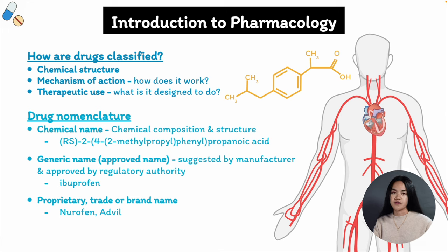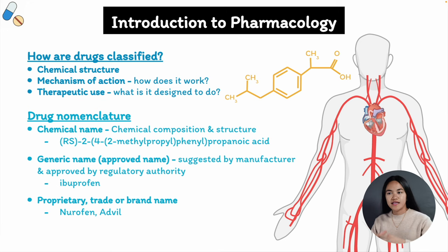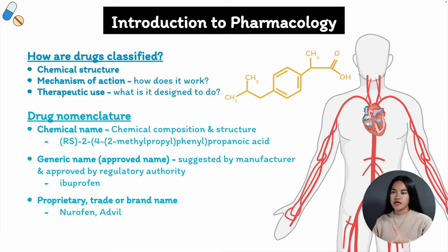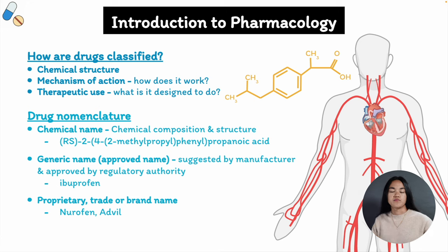Proprietary names, also known as brand names, are created by drug companies and are used to market their products. These names are protected by trademarks and are unique to a particular product. In summary, chemical names are important for research and development, generic names are important for prescribing and dispensing drugs, and proprietary names are important for marketing and brand recognition.